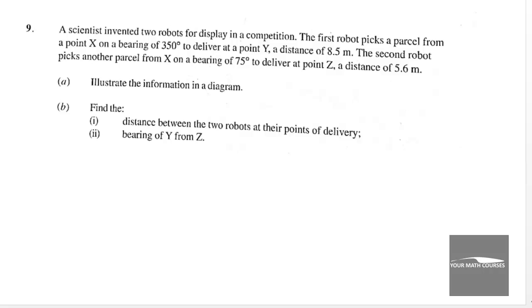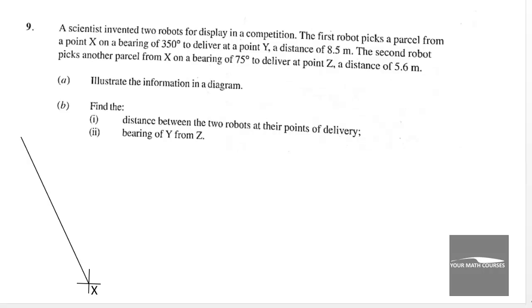Illustrate the information in a diagram. So let's illustrate the information. We have point X here and it moves on a bearing of 350 degrees to point Y. Then another robot from point X moves on a bearing of 75 degrees to point Z. So the delivery point is Y, Z and the distance between them is Y, Z.